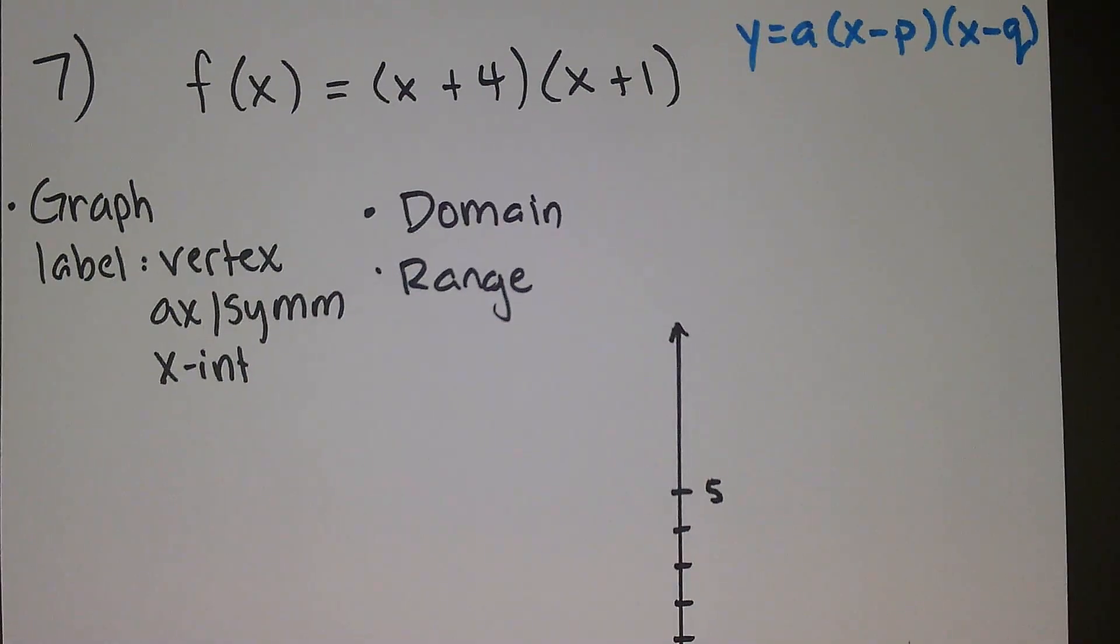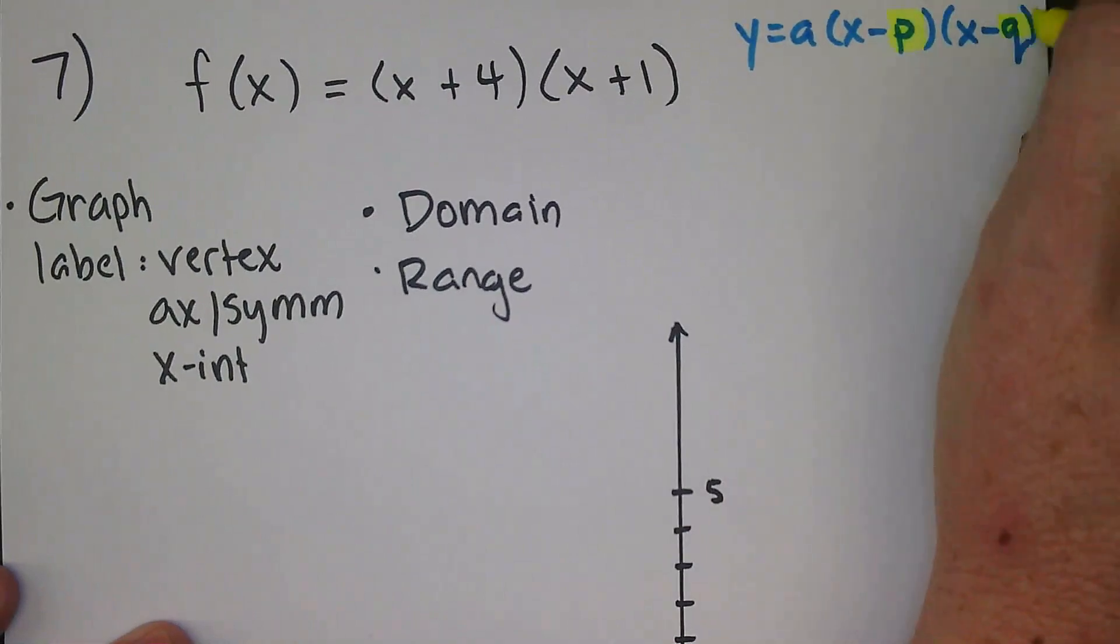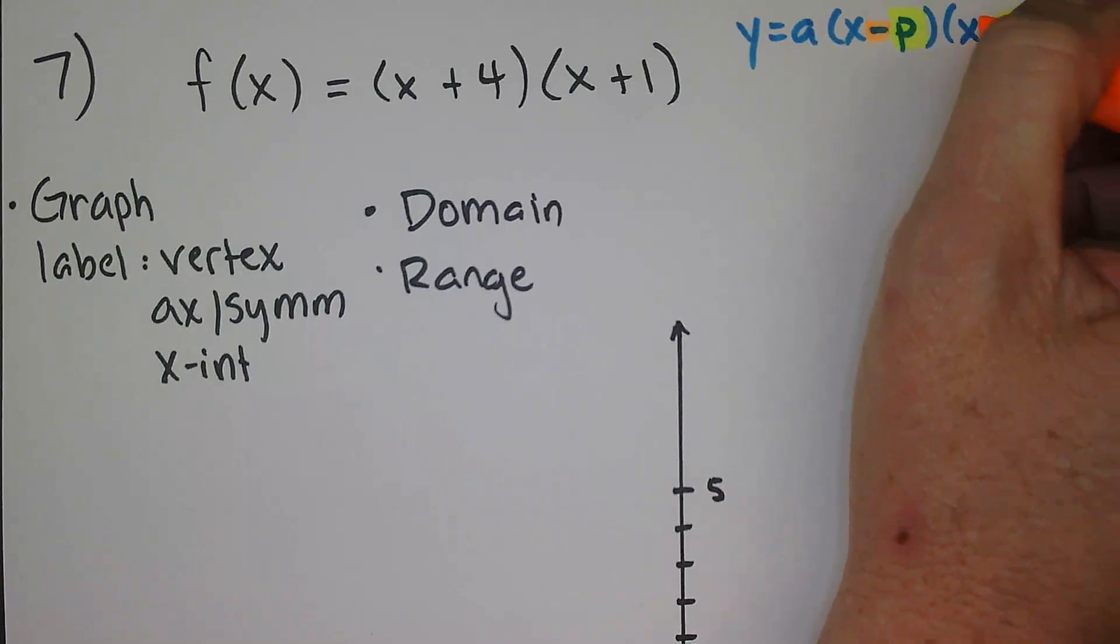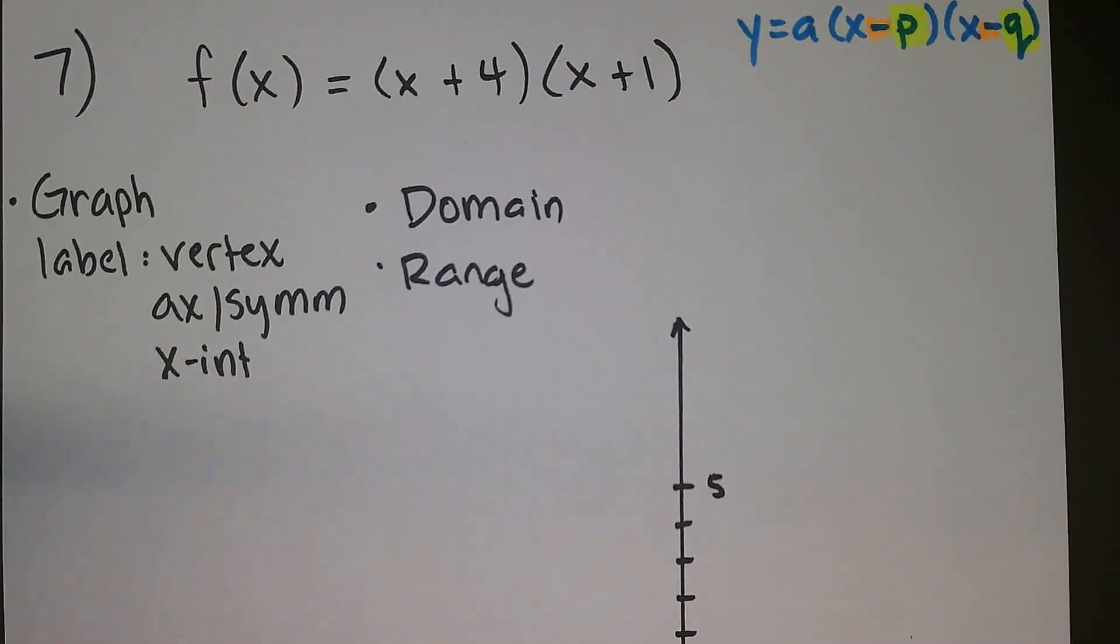Now those two numbers right there, the p-value and the q-value, those are your x-intercepts. So whatever numbers you see here, provided you pay attention to the fact that it's supposed to be subtraction, those are going to be your x-intercepts, and that's one of the things that we can do to help us graph.